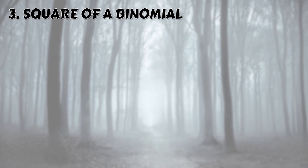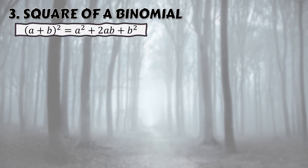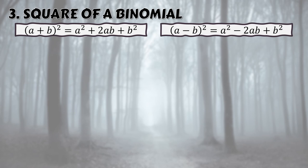The third special product is the square of a binomial. There are two formulas: (a + b)² = a squared plus 2ab plus b squared, and (a − b)² = a squared minus 2ab plus b squared. The sign in the middle follows the sign inside the binomial.